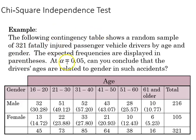Returning to our example, we're going to identify alpha at 0.05, and we already calculated our expected frequencies previously, and we already noted the observed frequencies in each cell. So now we can come to the question, can we conclude that the driver's ages are related to gender in accidents?